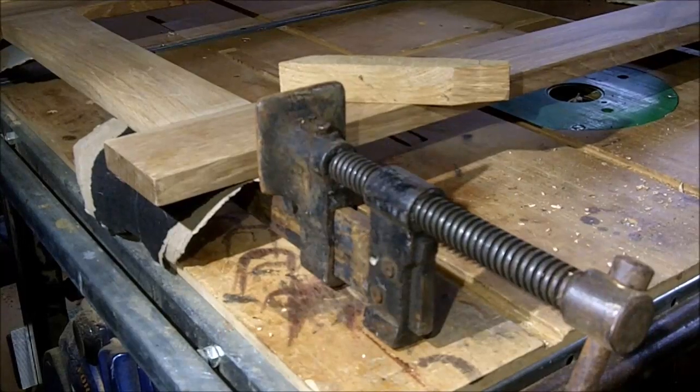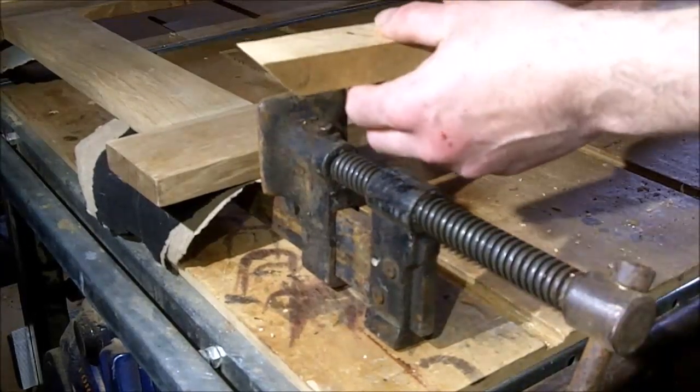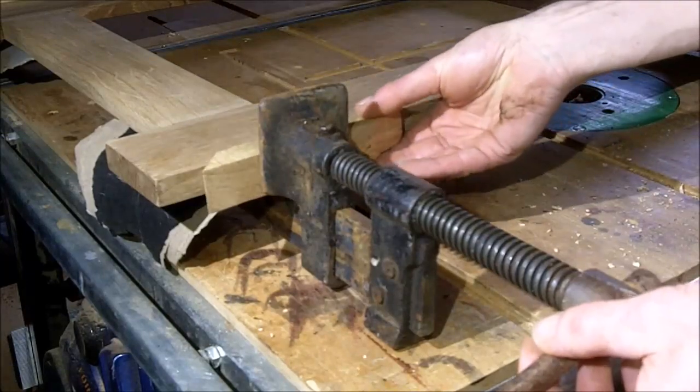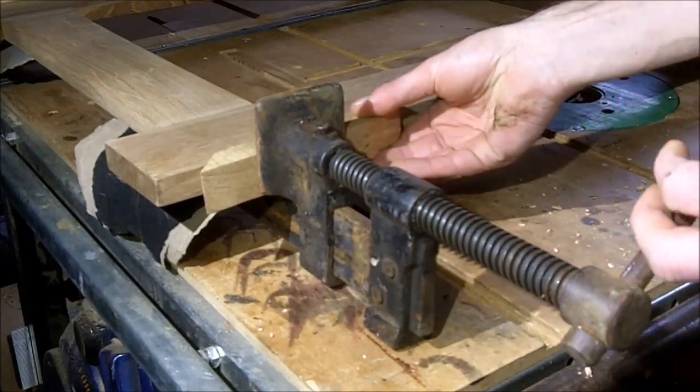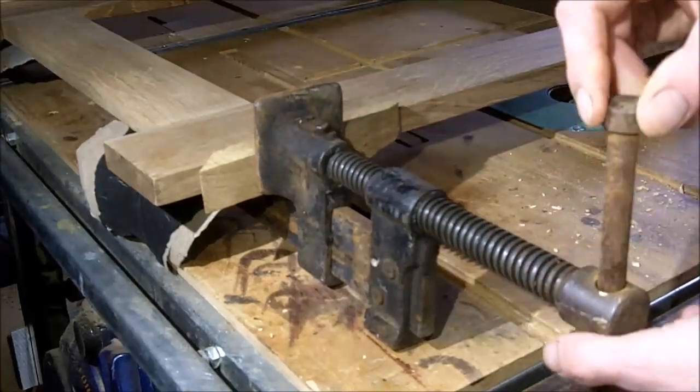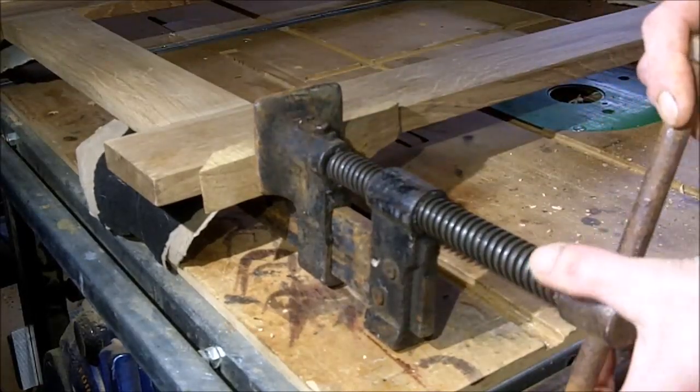Adjust the tommy bar on the other side of the sash clamp, again using a piece of waste wood to avoid any damage to your frame. Repeat for the other rail. And if all looks good and square, loosen clamps off slightly, add glue and tighten up and leave overnight.